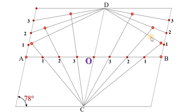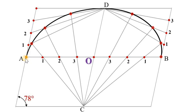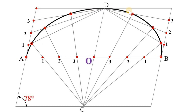Now join all the points by a smooth curve. Take care — it must pass from A, D, and B. This is actually the upper half portion of the ellipse.